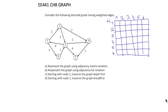If it is 0, it means there is no connection. We are considering only the edges going out of the node. From node 1, there is a connection to node 2 having value 2, and also a connection from 1 to 6 having weight 3.